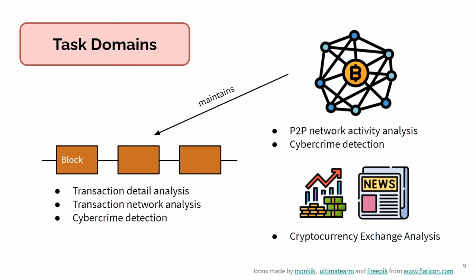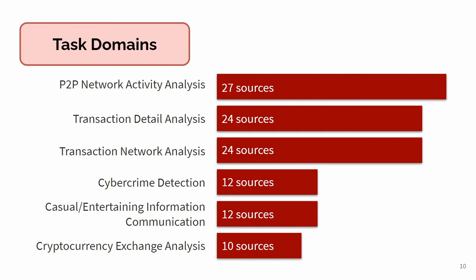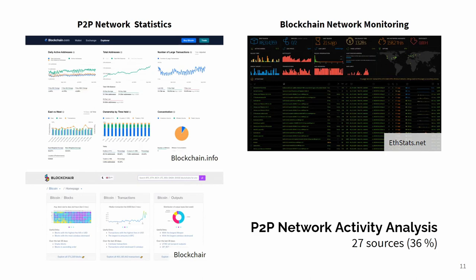We analyzed how common these task domains were in our sources. The first task domain, peer-to-peer network activity analysis, was the most common task we found in blockchain visualization tools. These typically present aggregated statistics that give an overview of activities in the peer-to-peer network, such as mining, transaction rates, and mempool statistics. As you can see from our example, most sources use time series charts to communicate the data.